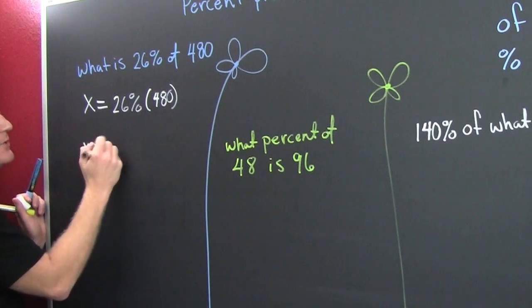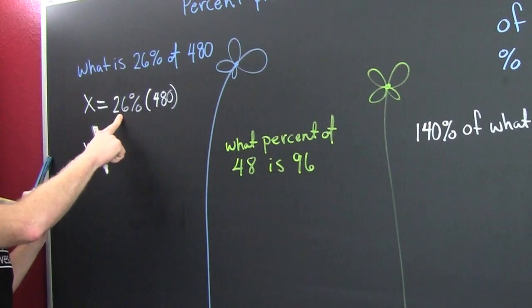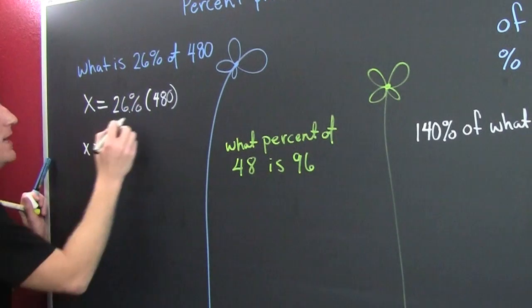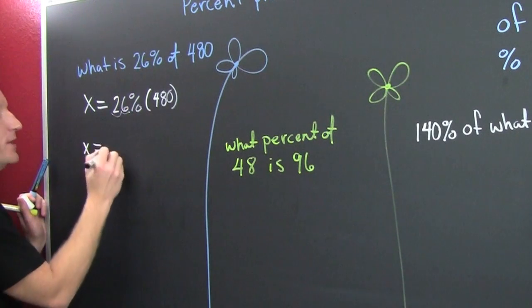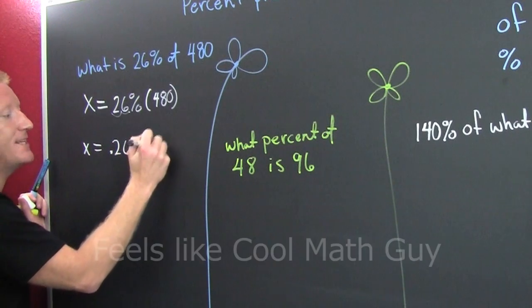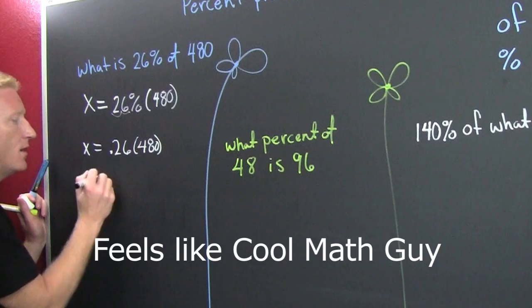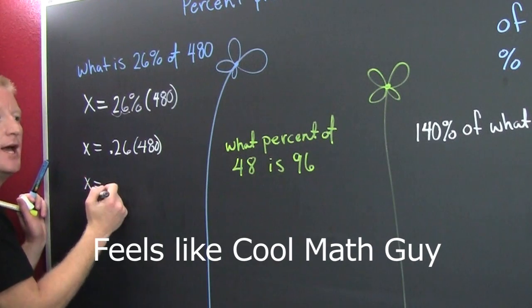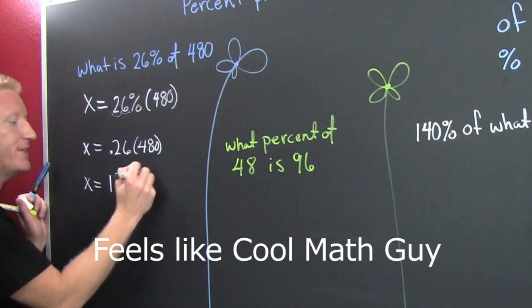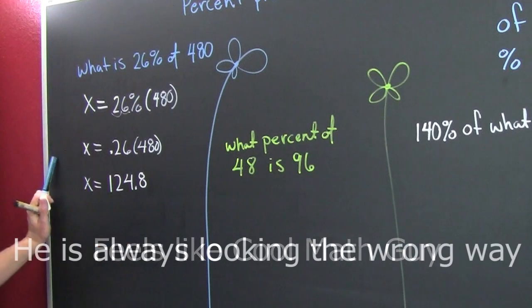So then x is equal to, how do we rewrite 26% as a decimal? Well, I go to that one spot in the back of my head and I move it not one, but two. So this is 0.26 times 480. So then we pound that out and we're about to find that that is 124.8. Great.